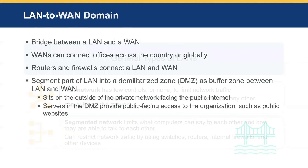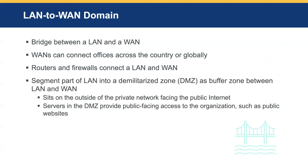We also have the local area network to wide area network domain, which bridges the LAN and WAN. Wide area networks are used to connect global offices across cities, countries, and even different continents. In order for local area network traffic to communicate with the wide area network, appropriate mechanisms must be in place — that is the purpose of the LAN to WAN domain.